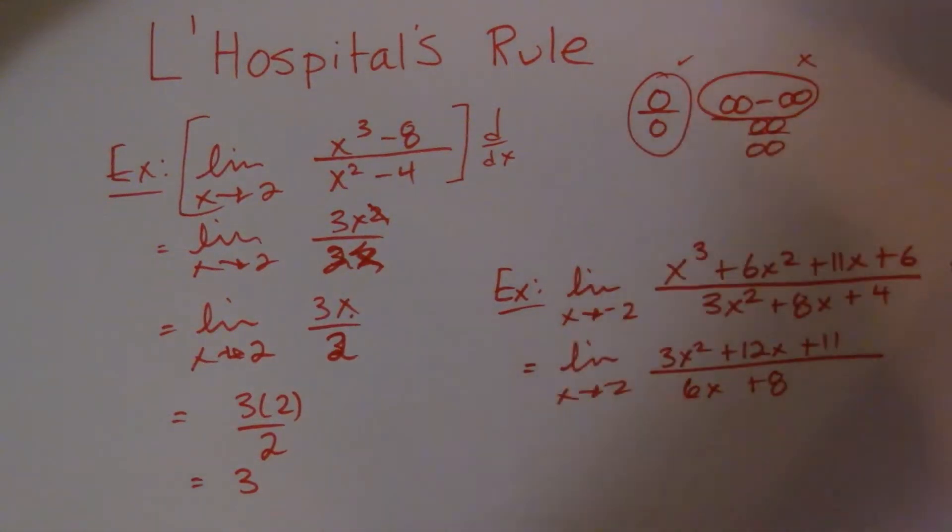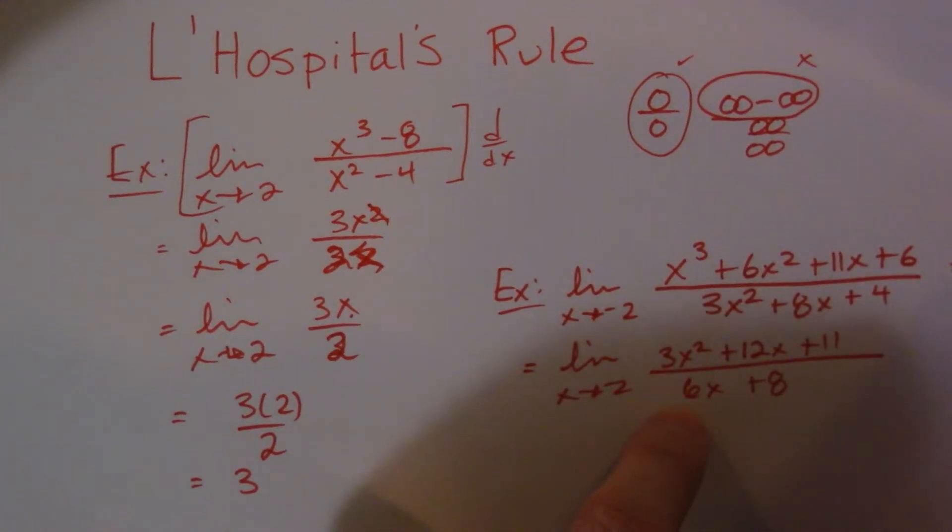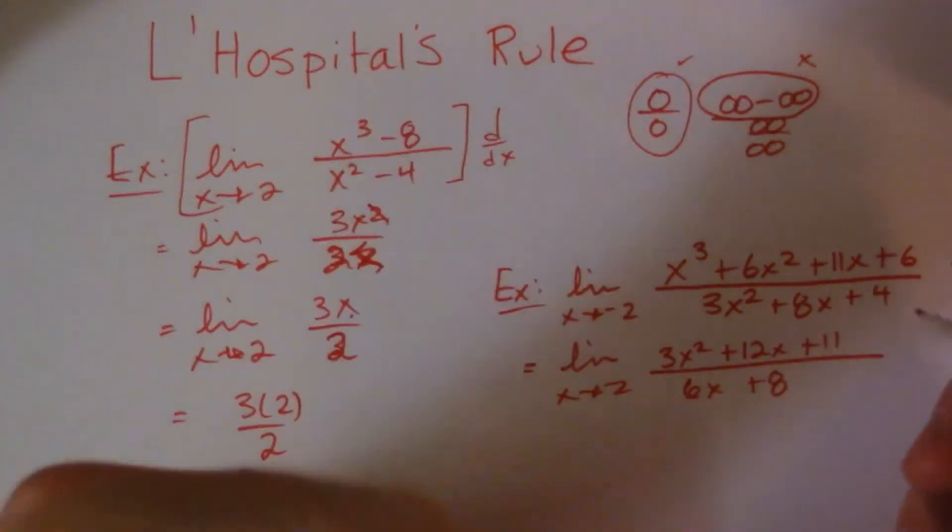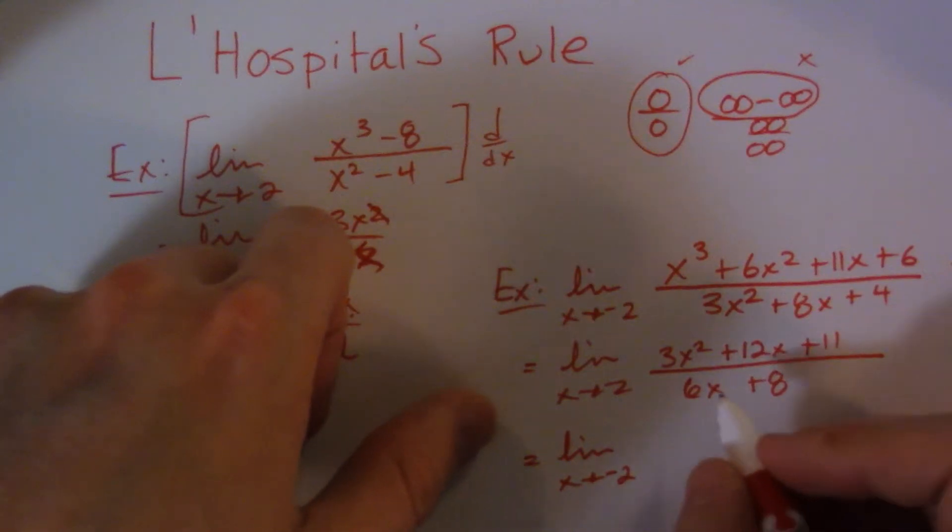So if by some miracle, this is still zero over zero, all you have to do is take the derivative again, and just keep going until you get rid of the zero over zero. You can take the derivative as many times as you want, and eventually you'll end up being able to take a limit.